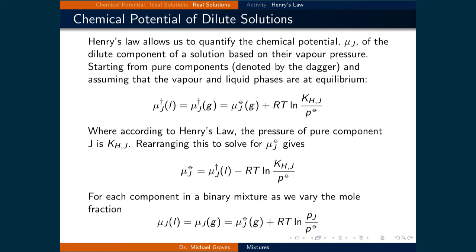Henry's Law allows us to quantify the chemical potential of the dilute component of a solution based on the vapor pressure. Starting from pure components, this time denoted by a dagger, and assuming that the vapor and liquid phase are at equilibrium, the chemical potential of component J in the liquid phase equals the chemical potential of component J in the gaseous phase, which equals the standard chemical potential of component J in the gaseous phase plus RT times the natural logarithm of Henry's constant of component J divided by the standard partial pressure.